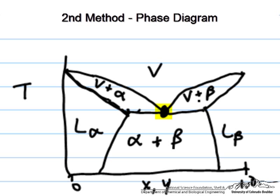This means that we are along this line somewhere. So along this line corresponds to vapor-liquid-liquid equilibrium.